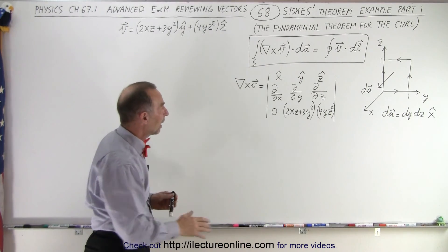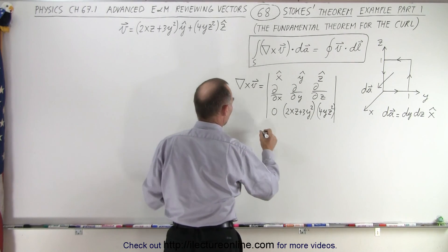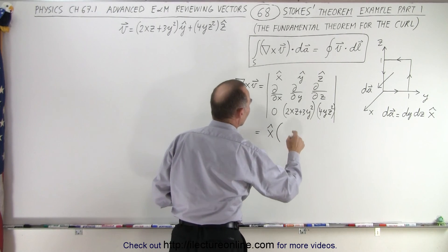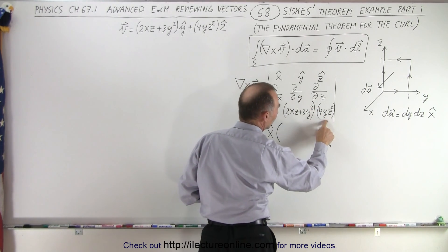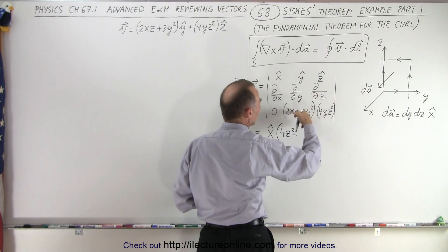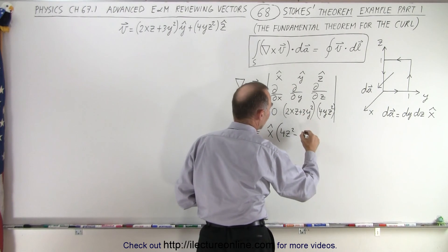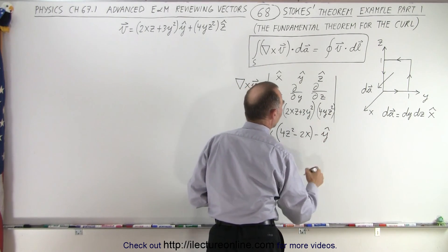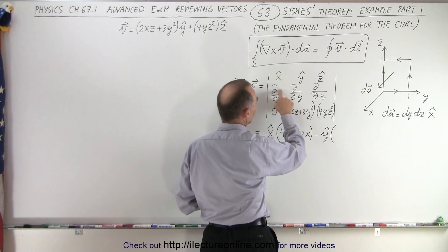Let's go ahead and do that. This is what the curl looks like. We take the x unit vector times the partial derivative with respect to y, which is going to be 4z squared, minus the partial derivative with respect to z, which in this case is 2x. Then we subtract the y unit vector times the partial derivatives.